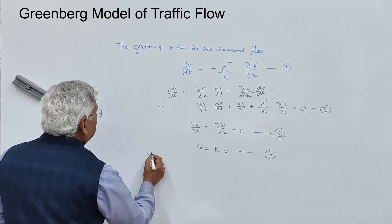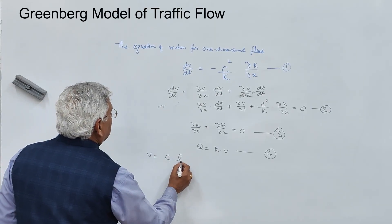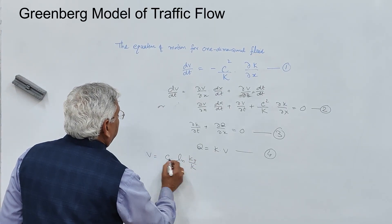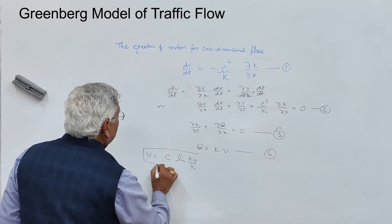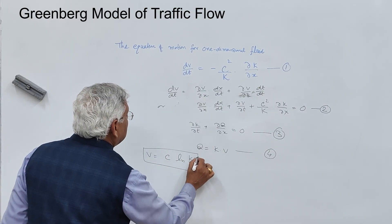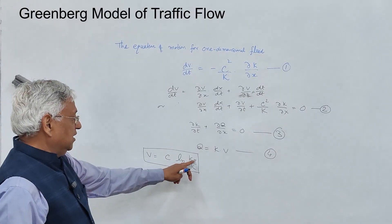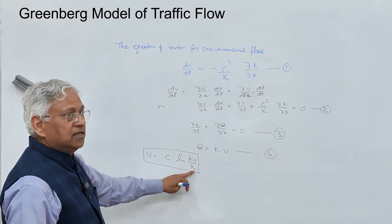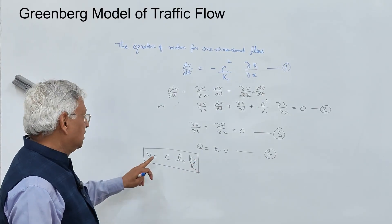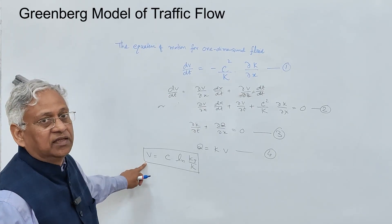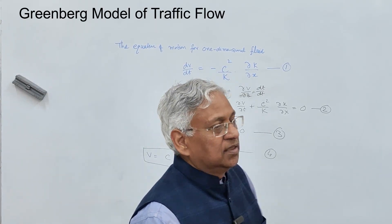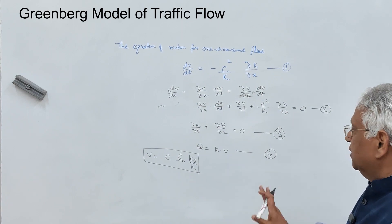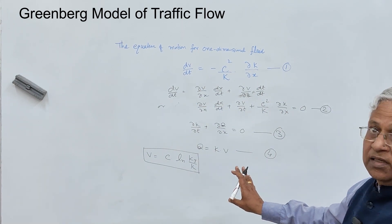The result is: v equals c times ln(kj/k). That is the Greenberg model. C is a constant, kj is jam density, k is the density at which speed is v, and v is the space mean speed at density k.